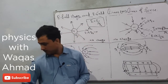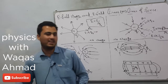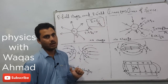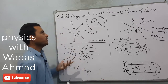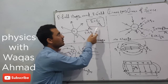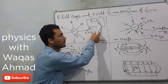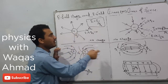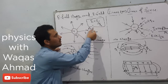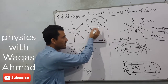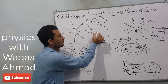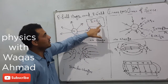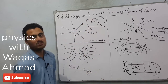Now let's discuss what is electric field strength. Electric field strength, also called electric field intensity, is the physical quantity which describes the strength of the electric field of a particular charge. It is basically the force exerted per unit test charge placed in that particular electric field. When we bring a small test charge near a positive source charge, an electrostatic force is exerted on the test charge, and that electrostatic force per unit test charge represents the electric field strength.